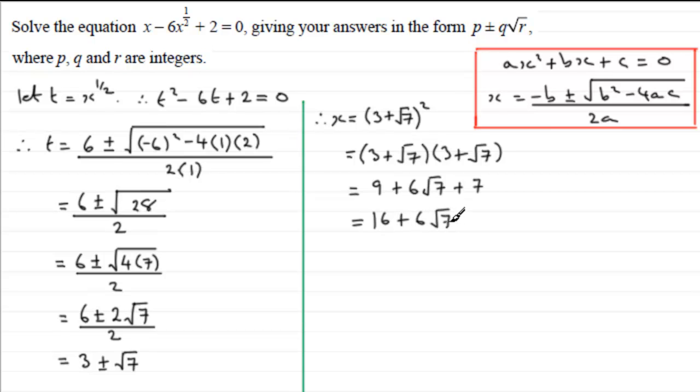And that is in this format here. We've still got to do though, I'll put or, we still got to do x equals 3 minus root 7 all squared.